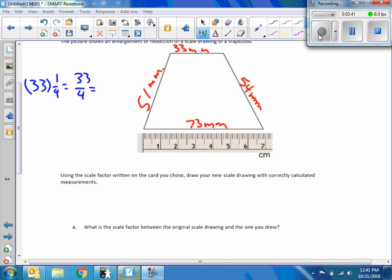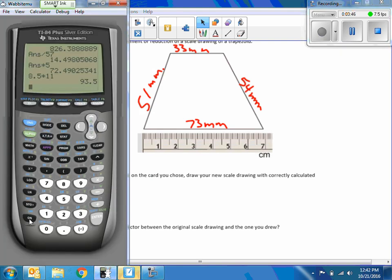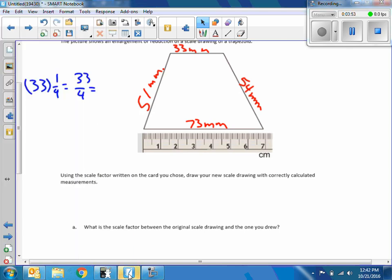33 divided by 4 is 8 and a quarter. So it would be 8 and one-quarter millimeters.